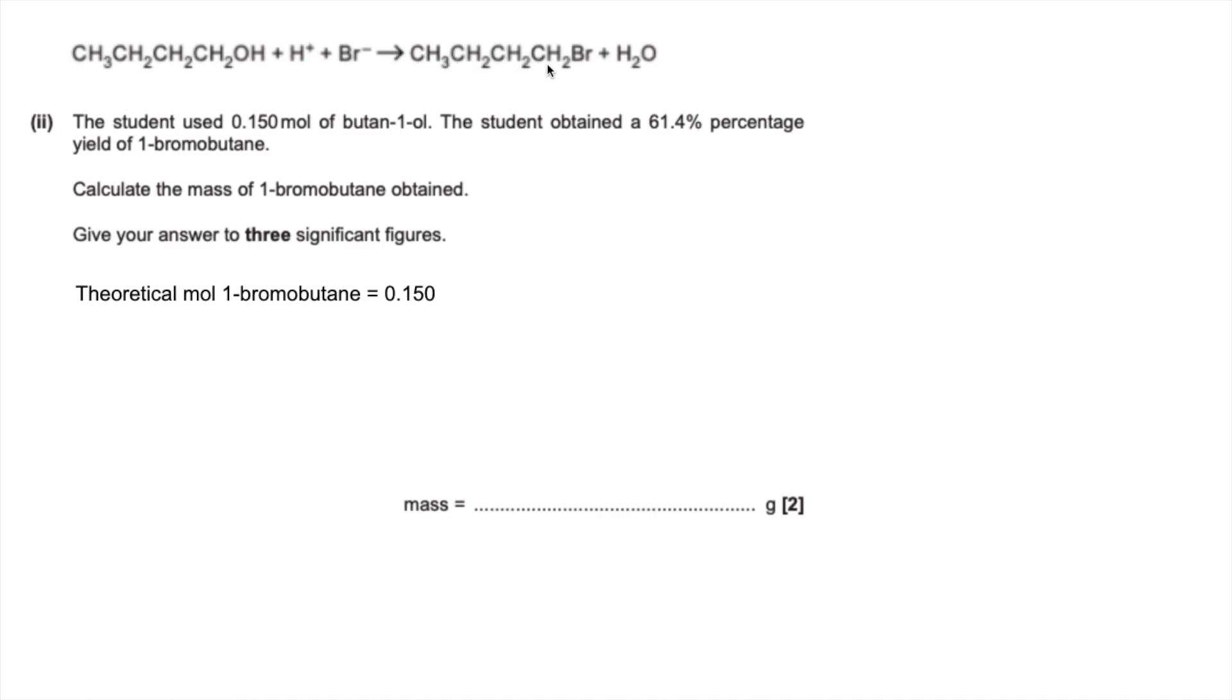Now we need to scale it down to find out what 61.4% would be. So the actual moles of 1-bromobutane is the theoretical moles multiplied by that percentage, 61.4 over 100, which comes out at 0.0921. Now we turn that into mass by multiplying by the MR of 1-bromobutane, 136.9. To three significant figures, that's 12.6 grams.